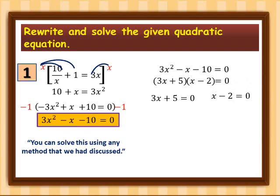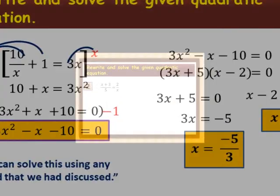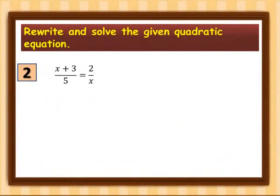So we have 3x = −5, divide by 3, giving x = −5/3, and x = 2. The two roots of Example 1 are negative 5/3 and 2. Let's proceed to the second example: (x + 3) over 5 is equal to 2 over x.